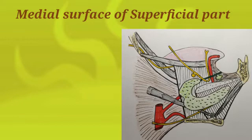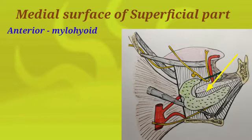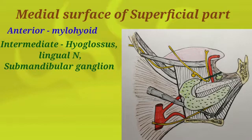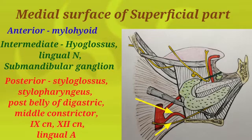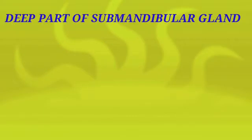The relation of the medial surface of the superficial part is very important. It is divided into three parts: anterior, intermediate, and posterior. Anteriorly, the medial surface is related to the mylohyoid muscle along with its supplying vessels and nerves; the hyoglossus muscle lies deeper to the mylohyoid muscle. The intermediate part of the medial surface is related to the hyoglossus muscle along with the lingual nerve and the submandibular ganglion, which lie superficial to the surface of the muscle. The posterior part of the medial surface is related to four important muscles: styloglossus, stylopharyngeus, posterior belly of digastric, and the middle constrictor of pharynx — along with two cranial nerves, the glossopharyngeal nerve and hypoglossal nerve, and the lingual artery.